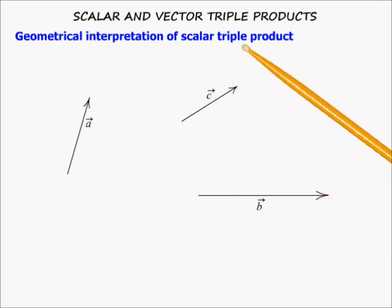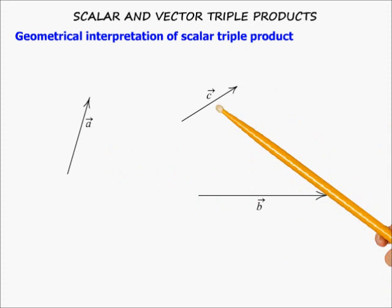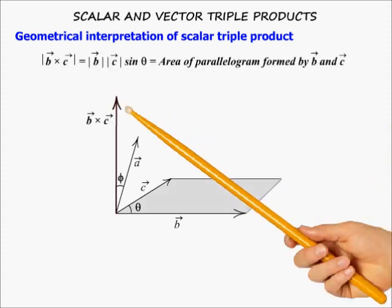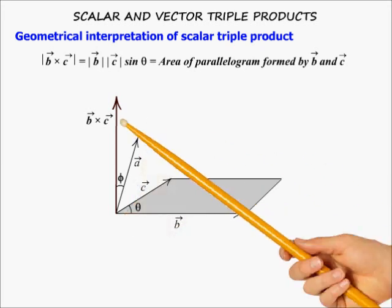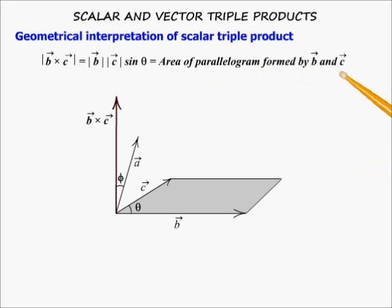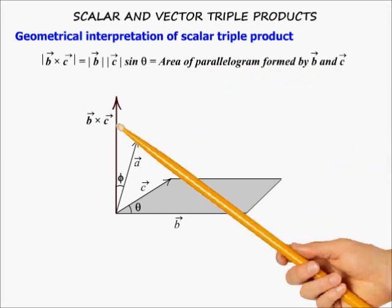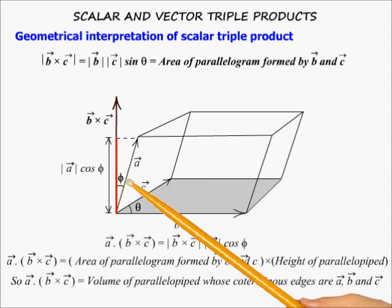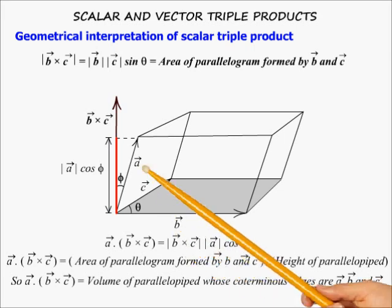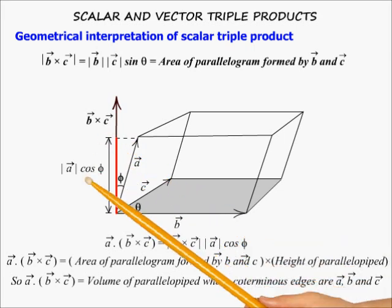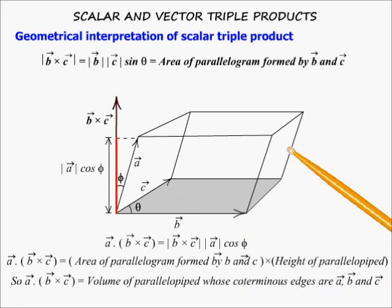Geometrical interpretation of scalar triple product. Let A, B and C be 3 non-coplanar vectors. B cross C is a vector perpendicular to the plane of B and C in a direction following the right-hand rule, and its magnitude is the area of the parallelogram formed by B and C. Let the angle between vector B cross C and vector A be phi. The dot product of these two vectors is the magnitude of B cross C multiplied by the projection of A on B cross C, which is |A| cos phi. This |A| cos phi is the height of the parallelepiped. So the scalar triple product is the volume of the parallelepiped whose coterminus edges are vectors A, B and C.